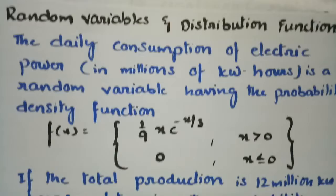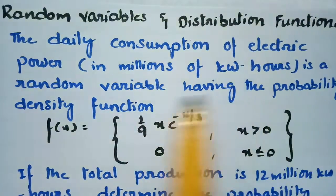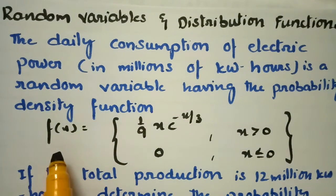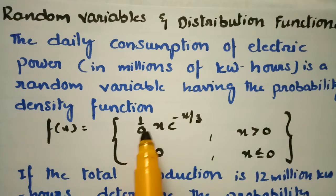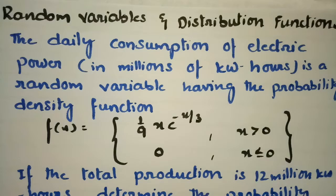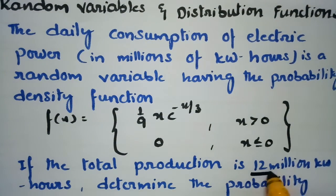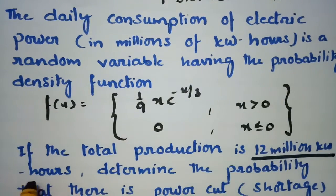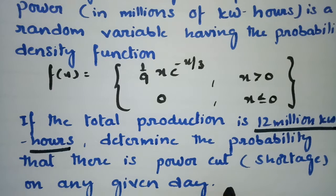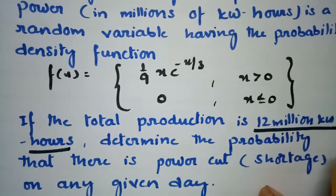The daily consumption of electric power in millions of kilowatt hours is a random variable having the probability density function f(x) = (1/9)·x·e^(-x/3) when x is positive. The total production is 12 million kilowatt hours, and we need to determine the probability that there is a power cut. So the daily consumption here is 12 million kilowatt hours.